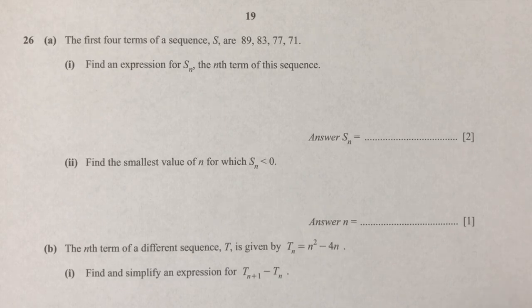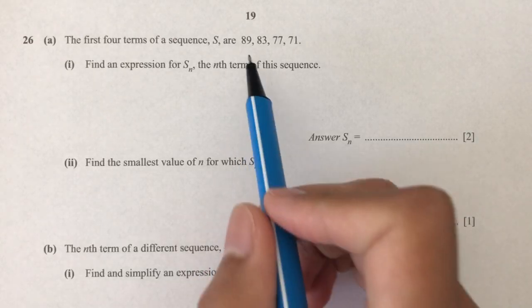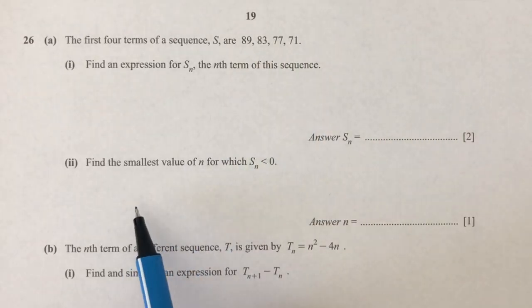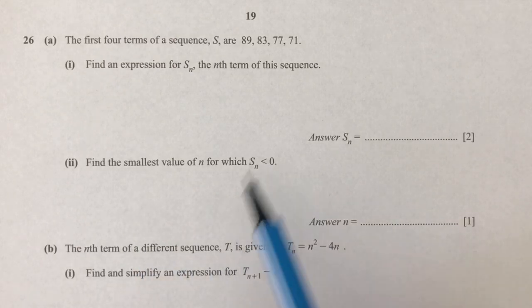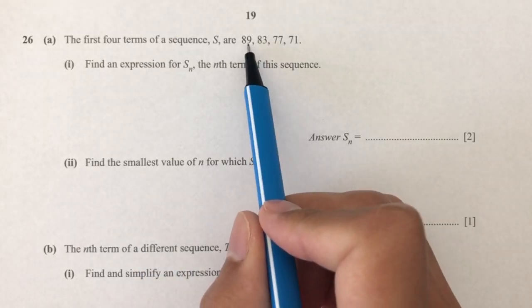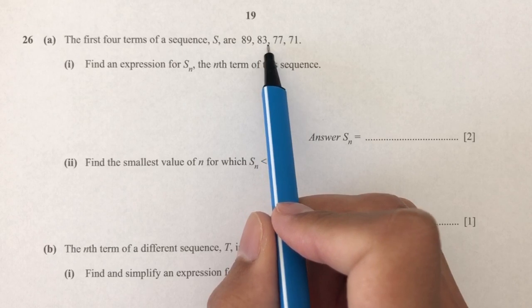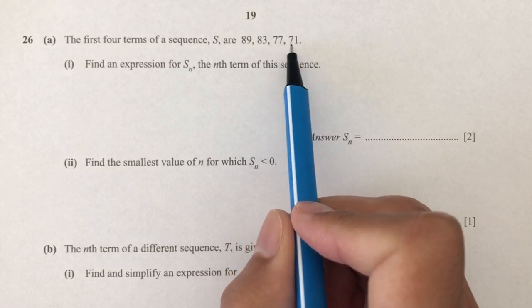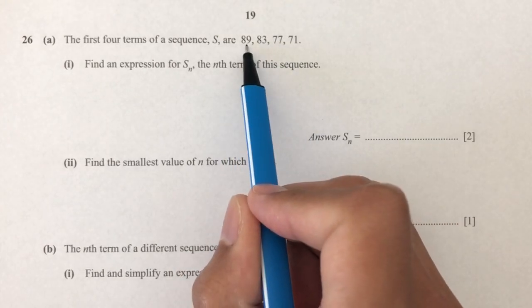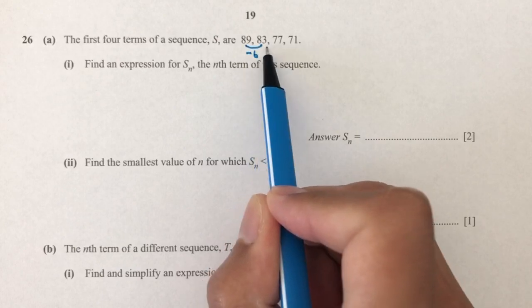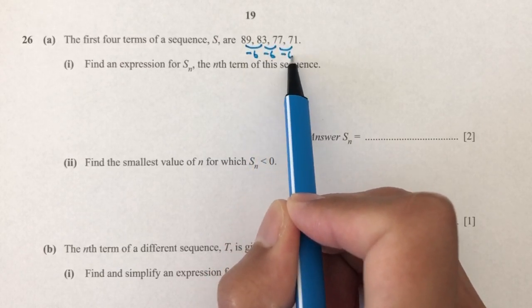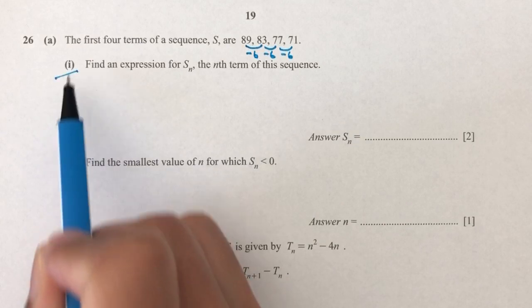The first four terms of sequence S are 89, 83, 77, 71. If you observe what happens from 89 to 83, 83 to 77, 77 to 71, basically each time you're subtracting six.